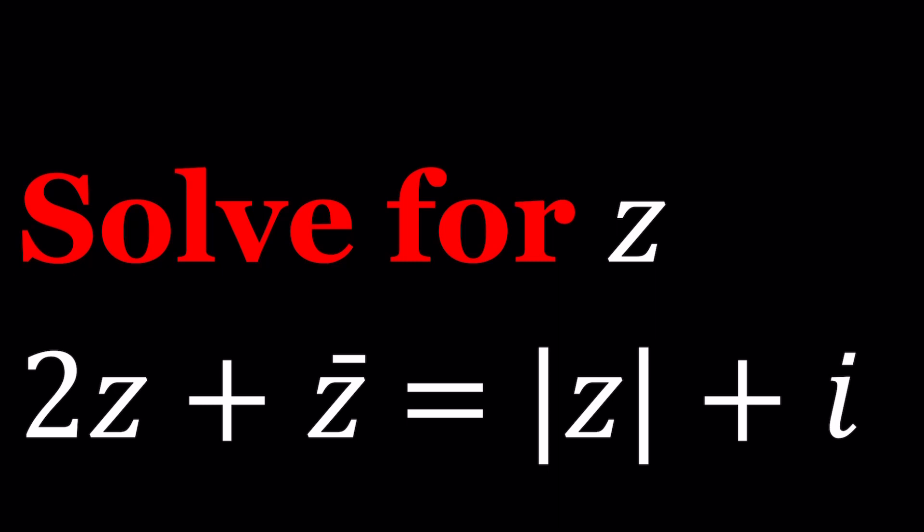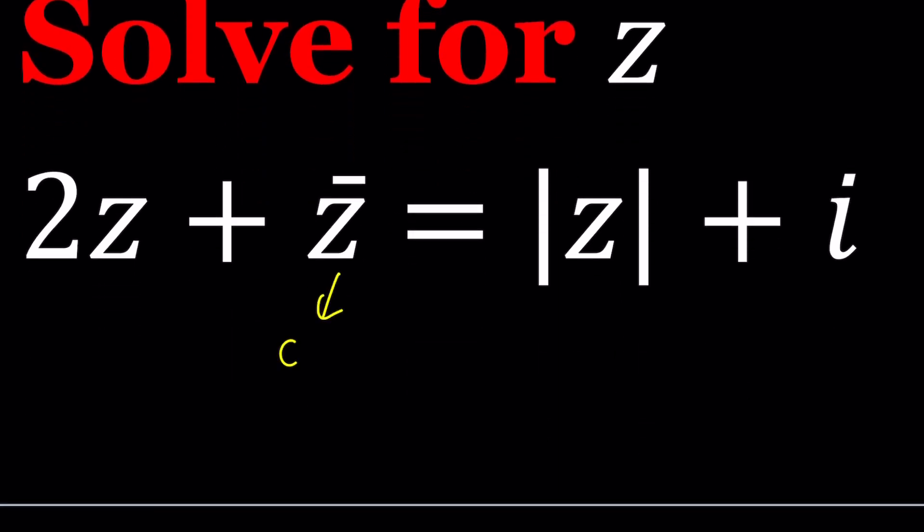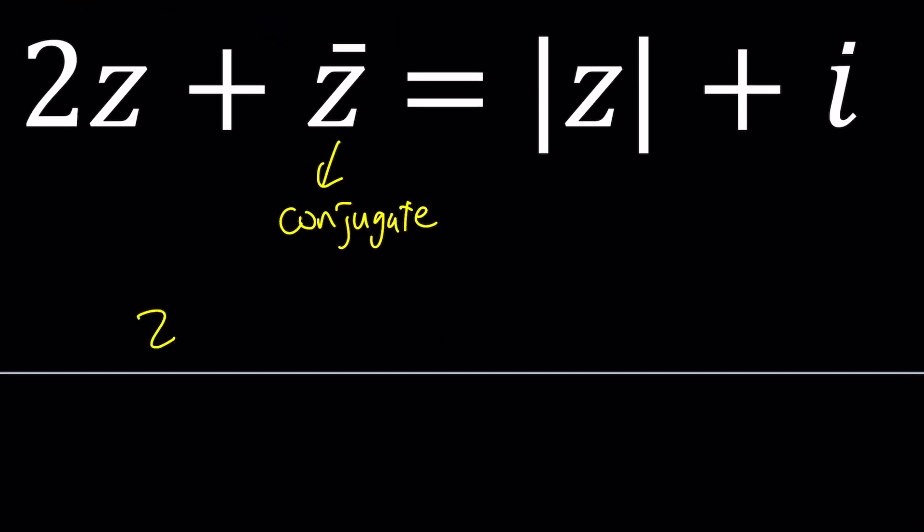Z bar represents the complex conjugate of Z and the absolute value represents the modulus. So a couple definitions. First, if Z is a complex number we can write it in standard form as A plus BI.